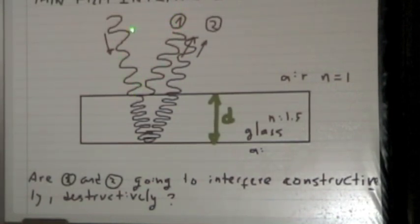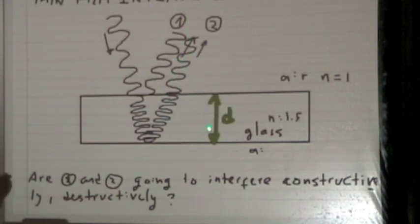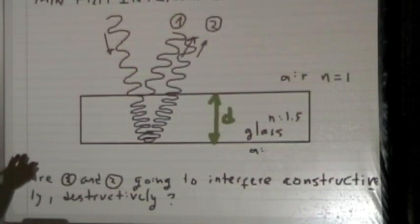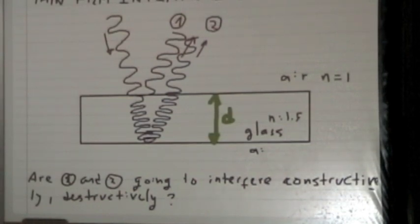Part of that wave is going to go through, pass the top surface, move down, hit the bottom boundary and be reflected — wave two. Every time it finds a boundary it gets reflected. The interesting part is what wave one and wave two are going to do, because they're moving in the same direction and have the same wavelength. Any difference in phase will result in constructive or destructive interference.